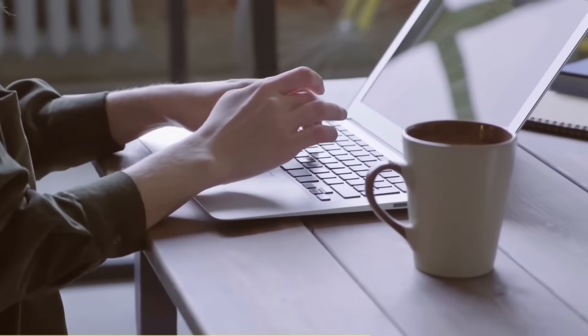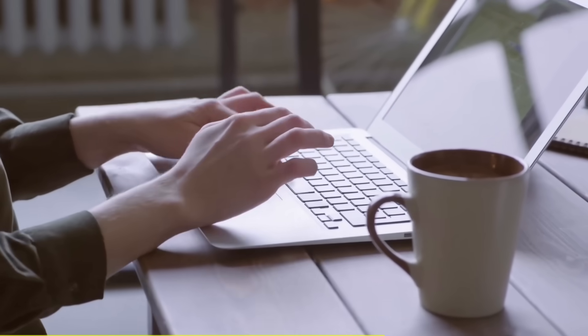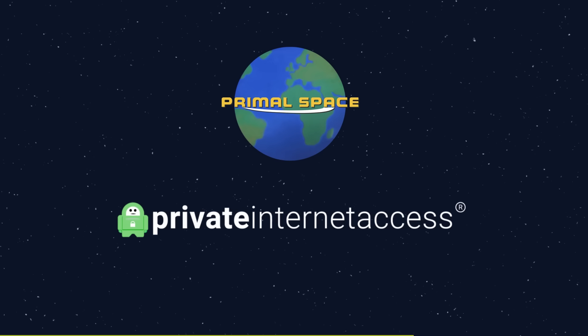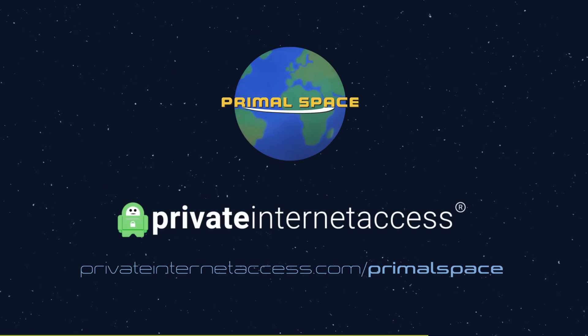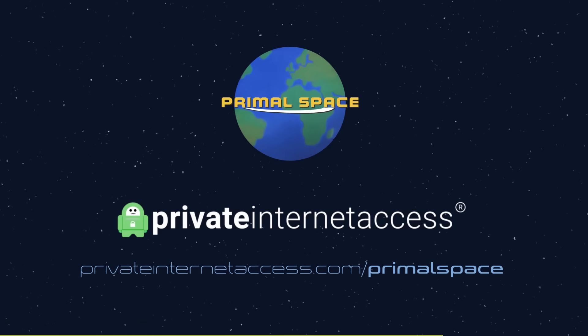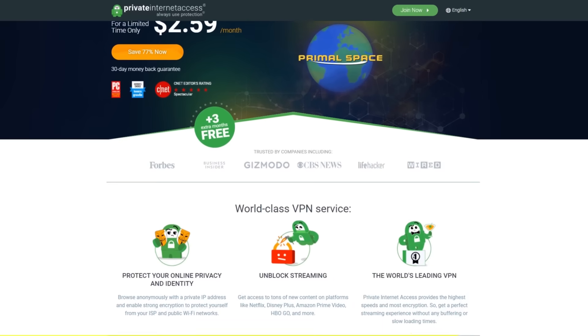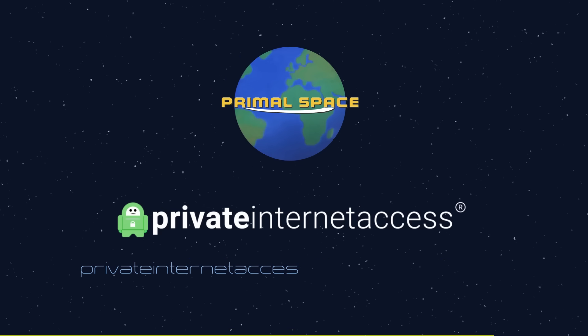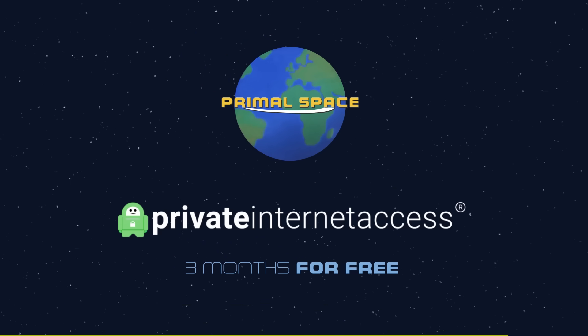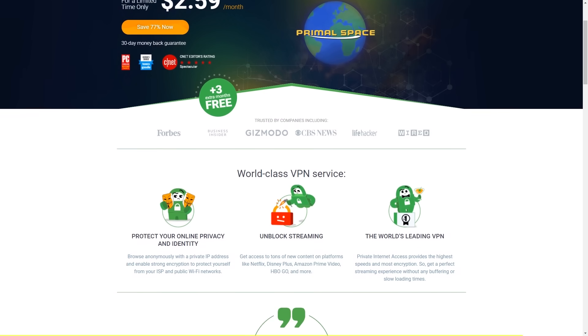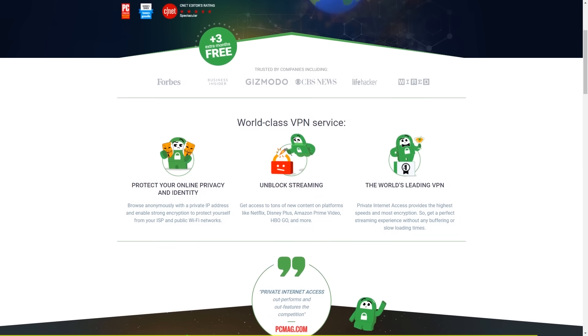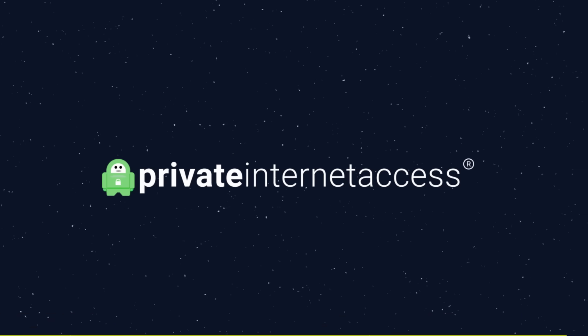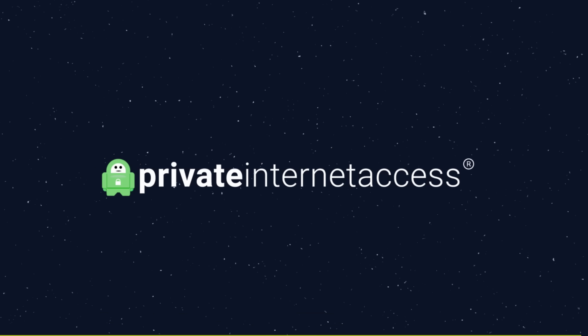This is more important than ever now that more and more people are working from home. To support Primal Space and secure your data, visit privateinternetaccess.com slash primalspace. This will give you two years of complete access for just $2.59 a month. You'll also get an extra three months for free. There's multiple payment options and a 30-day money-back guarantee, so you have nothing to lose. Protect your internet data today by using Private Internet Access.